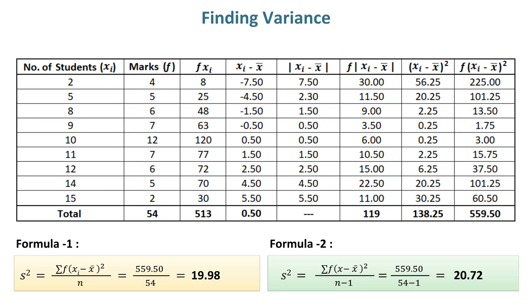Finding variance. The numerator value for finding variance is 72,960 and the denominator value is 60. Thus, the variance in this example in Formula 1 is 19.98. When we subtract 1 from the sample size in Formula 2, then the value of variance becomes a little higher compared to Formula 1, which is 20.72.